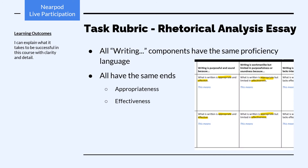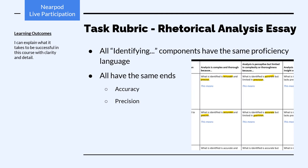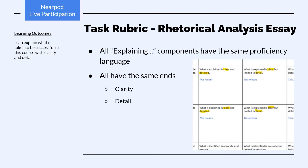All writing components have the same proficiency language — we're looking for appropriateness and effectiveness. All identifying components have the same proficiency language as well — we're looking for accuracy and precision. All explaining components also have the same proficiency language — we're looking for clarity and detail.